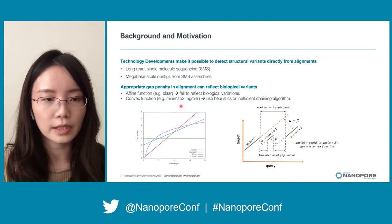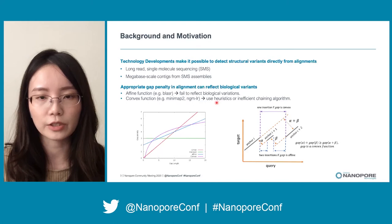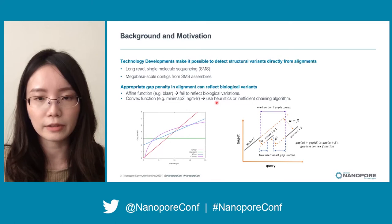There are already several aligners using convex gap penalty, for example Minimap2 and NGMLR. However, Minimap2 uses heuristics and NGMLR adopts an inefficient alignment algorithm. Therefore, we wanted to develop a new aligner that implements an efficient alignment algorithm with a convex gap penalty.